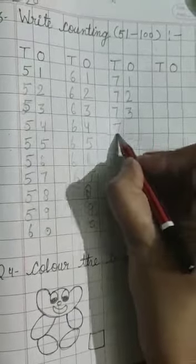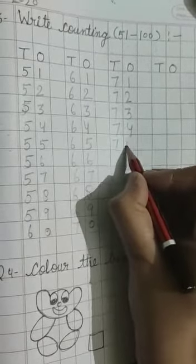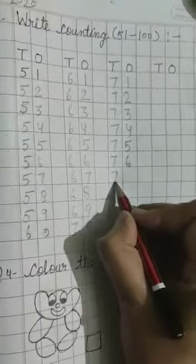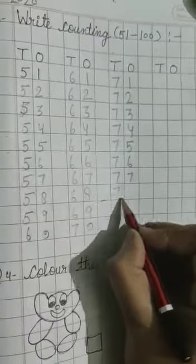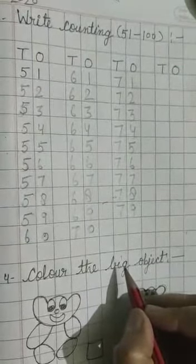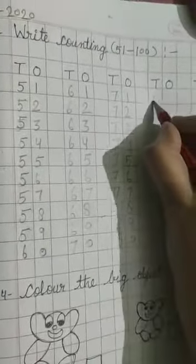This way you have to complete. 75, 76, 77, 78, 79. What comes after 79? 80. Then 81.